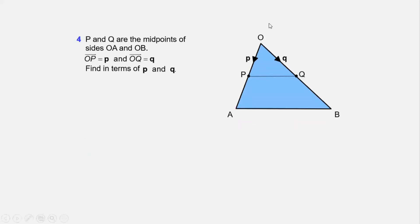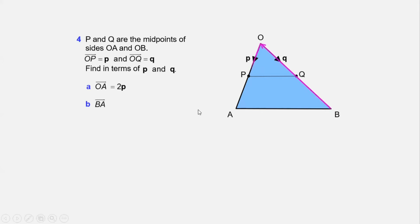One more question. You are given triangle OAB. P and Q are the midpoints of OA and OB respectively. Vector OP = p and vector OQ = q. Find vector OA. Since P is the midpoint, OA = 2p. Find vector BA = BO + OA. Since Q is the midpoint of OB, OB = 2q. Going against the direction, BO = −2q. So BA = −2q + 2p.